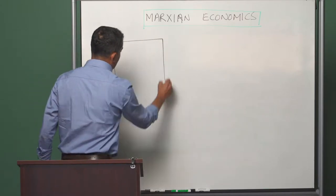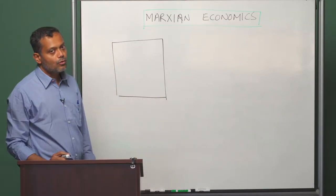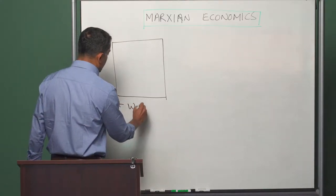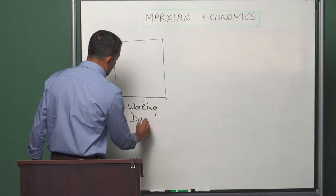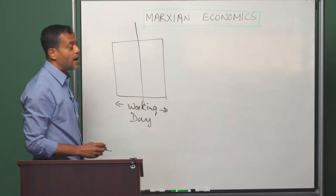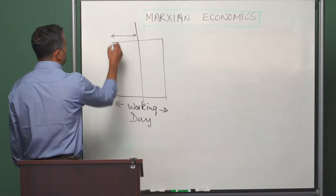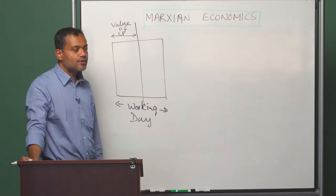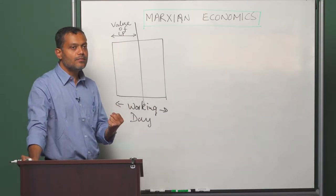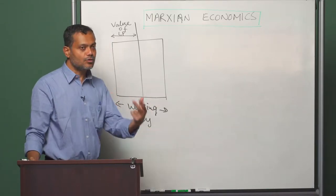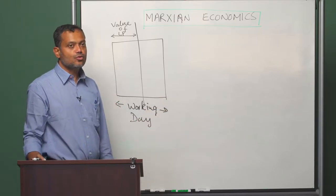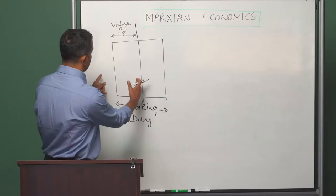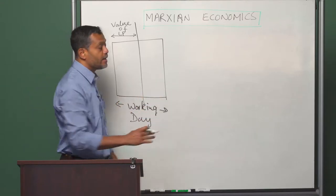The width of the box represents the total amount of labour involved in production — you can think of it as the total length of the working day. The total working day is divided into two parts by the value of labour power. The value of labour power refers to the amount of social labour time that is returned to the working class in terms of the wage. The length of the box represents the total value added by the working class, and they get back only a fraction of what they add — the remaining is surplus value.